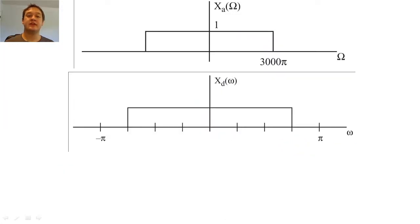To better understand the two scaling factors, let's look at an example. Let's suppose that our x sub a of omega is an ideal low-pass filter with band limit 3000 pi radians per second. If we sample at 4000 hertz, the band limit of the digital filter would be 3 pi over 4.